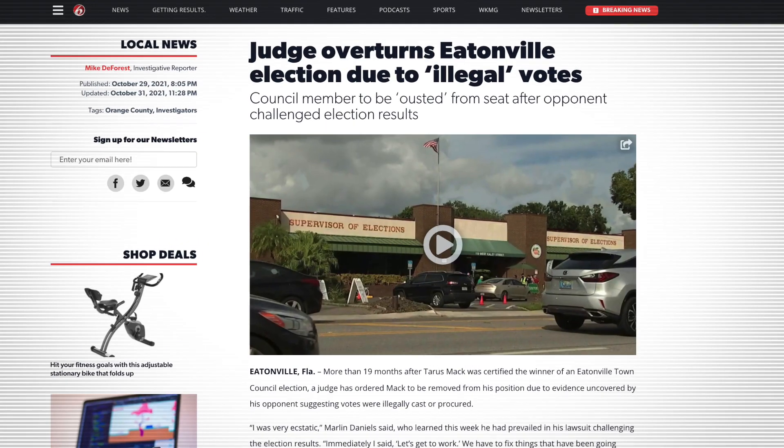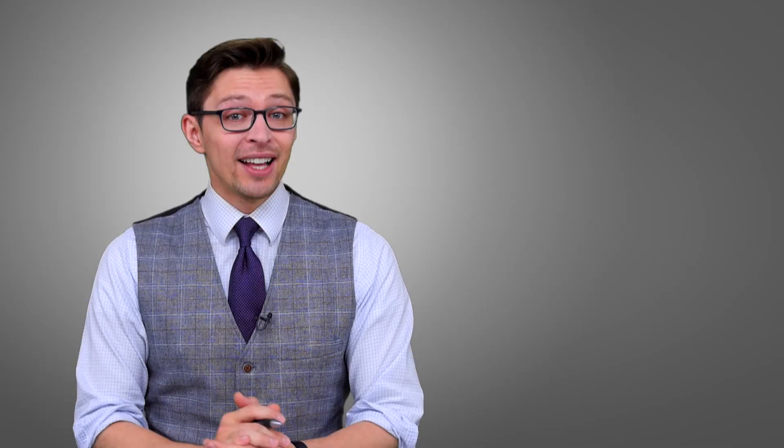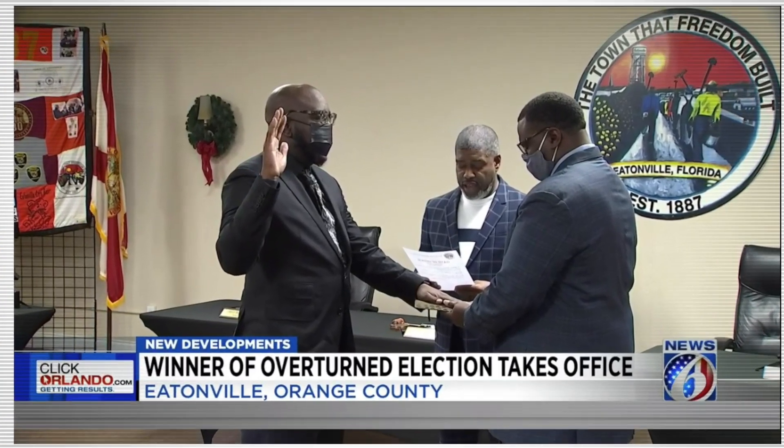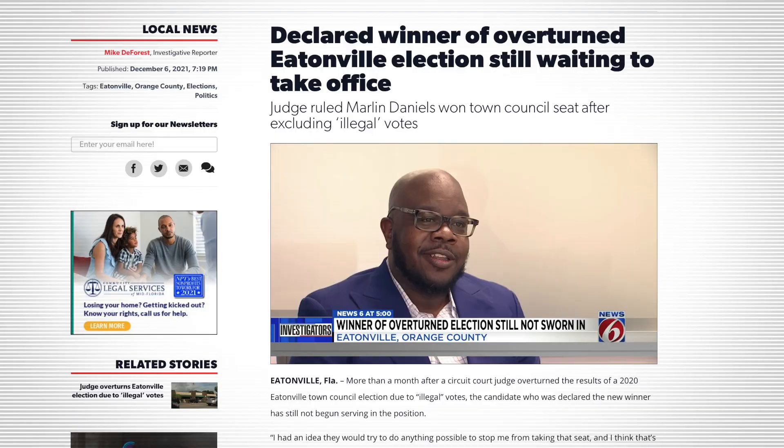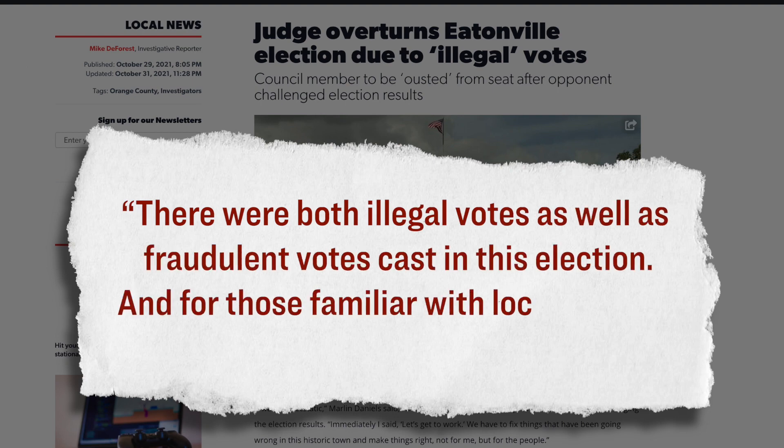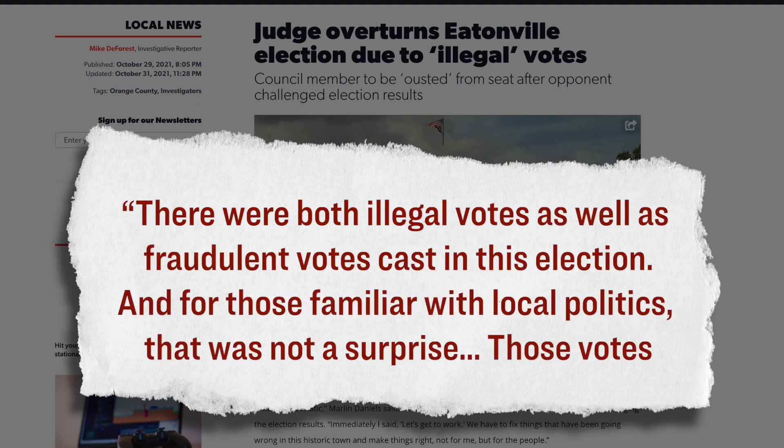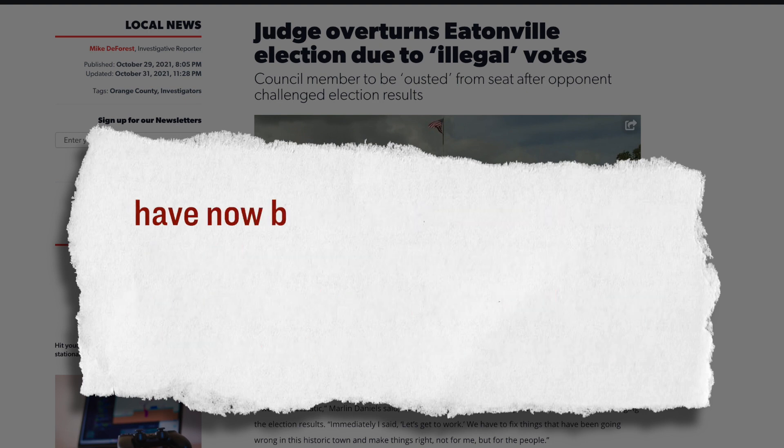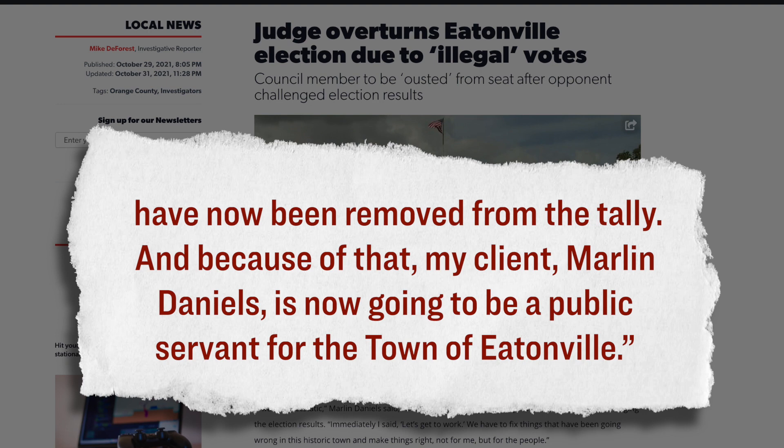This is your daily Facts Matter Update, and I'm your host, Roman, from the Epoch Times. Now let's begin today's discussion over in Florida, where a local judge has just overturned an election due to the discovery of enough illegal votes to alter the outcome. Specifically, what happened was that 19 months ago, a man named Taurus Mack was certified as the winner of Eatonville, Florida's town council election. However, his opponent in the race, Mr. Marlon Daniels, he challenged the election results by filing a lawsuit. And then after 19 months of litigation, the judge in the case ruled in Mr. Daniels's favor, and he ordered the council member to be removed from his position due to uncovered evidence which suggested that votes were illegally cast and procured. Here's what the lawyers of Mr. Daniels had to say on the matter.